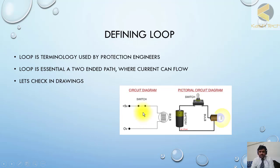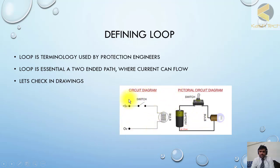Here you can see an example of two different circuits. This is the circuit as you would normally visualize it in actuality, and the same circuit can be drawn in a diagram form. In a panel, there will obviously be one AC loop for lighting and heating.